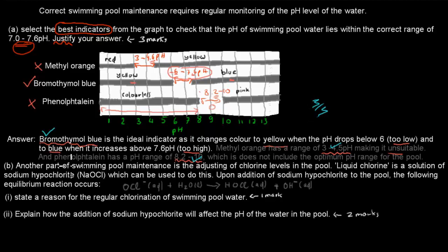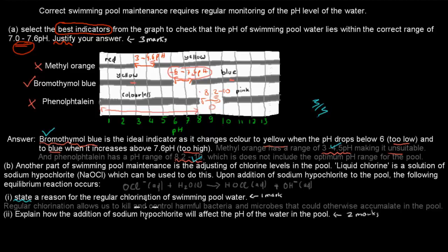Now for the B part, another part of the swimming pool maintenance is adjusting. So in this case, we have to state a reason for the regular chlorination of swimming pool water. We can't get that from the question. We just need to know that we use chlorination to kill bacteria. Regular chlorination allows us to kill and control harmful bacteria and microbes that could otherwise accumulate in the pool. So we use that to kill off bacteria. And that gets you one mark. So one out of one for that kind of answer.